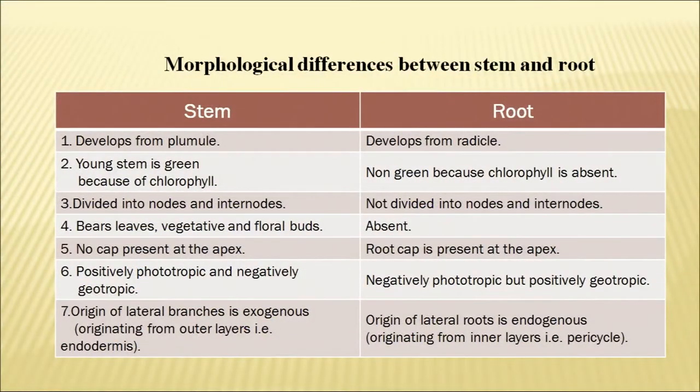The stem is positively phototropic and negatively geotropic — it grows away from the pull of gravity. Roots are negatively phototropic but positively geotropic, meaning roots turn towards the gravitational pull. The origin of lateral branches in the stem is exogenous, from the outer layers of the endodermis, whereas roots develop endogenously from the inner layers inside the pericycle.